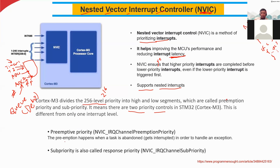Preemptive priority means preemption happens when a task is abandoned in order to handle an exception. Sub-priority is also called response priority. You can look at the reference manual to find the keywords to set up these kinds of priorities.